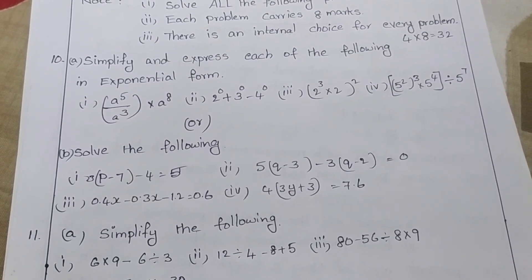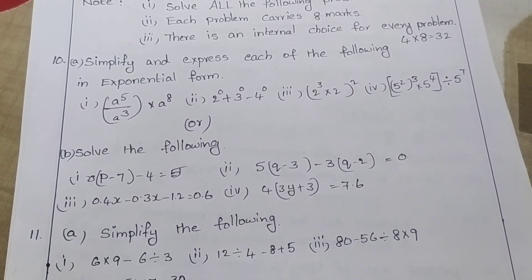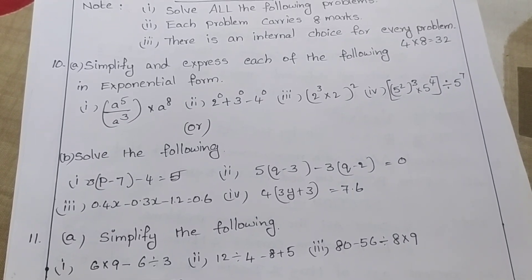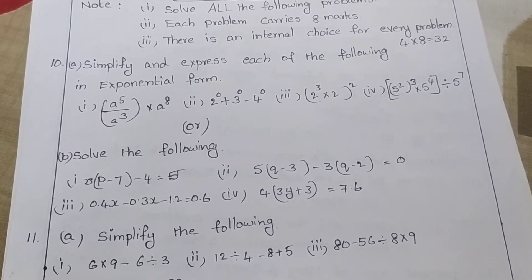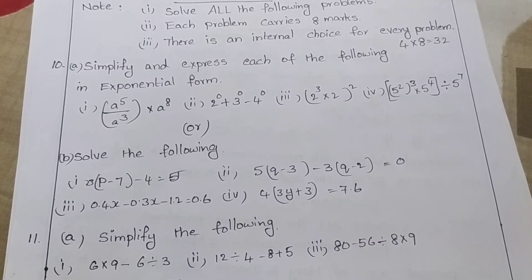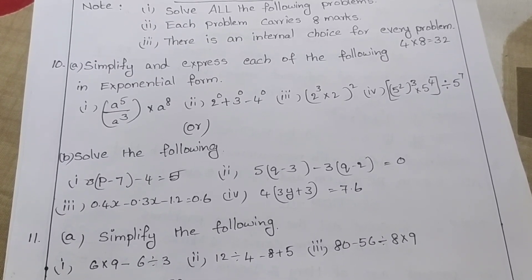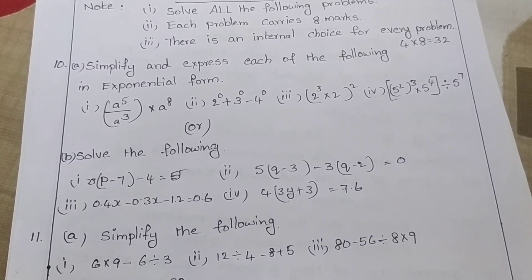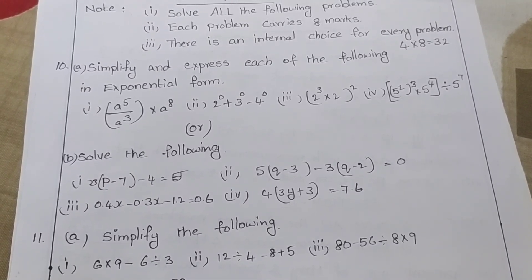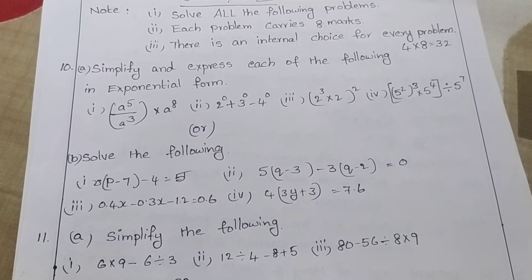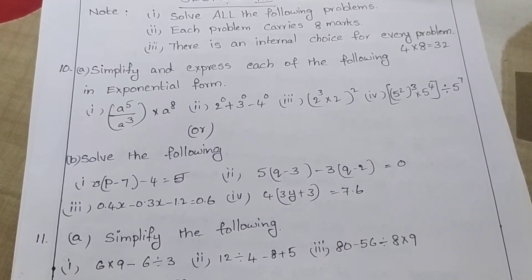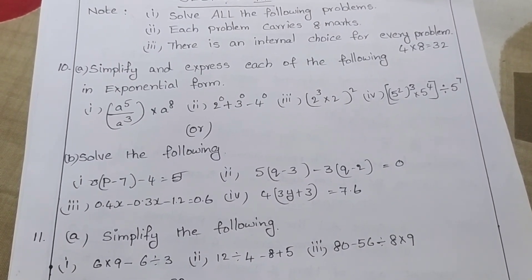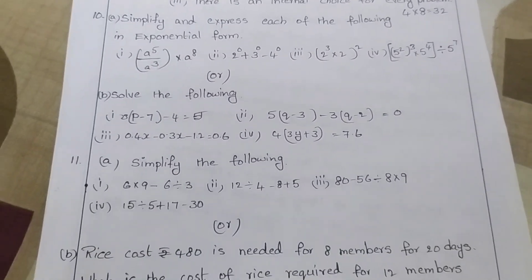Solve the following: 3 into P minus 7 minus 4 is equal to 5; 5 into Q minus 3 minus 3Q minus 2 is equal to 0; 0.4x minus 0.3x minus 1.2 is equal to 0.6; and 4 into 3y plus 3 is equal to 7.6.